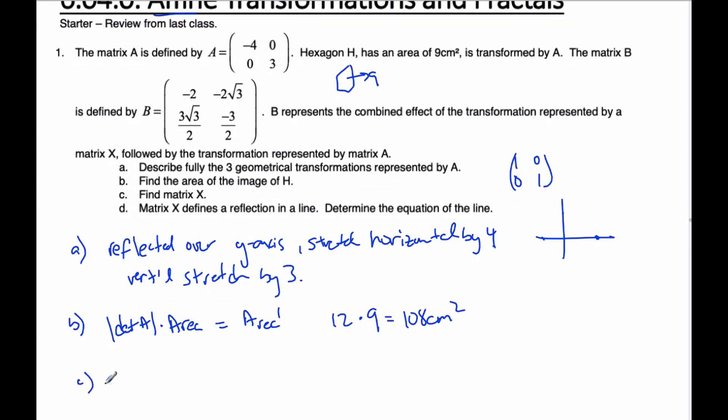Part C now says find matrix X. Well, what is X again? So B represents the combined effect of the transformation represented by matrix X, followed by the transformation represented by A. So, X goes first, and then A. So, I write them in the opposite order. When I multiply those two together, I get B, is what this is saying here.